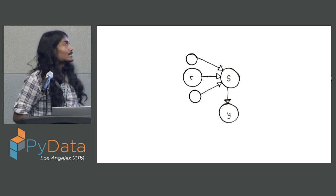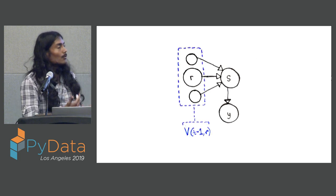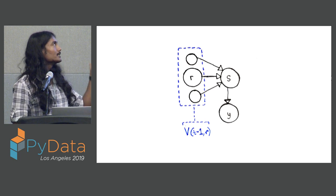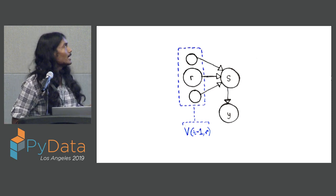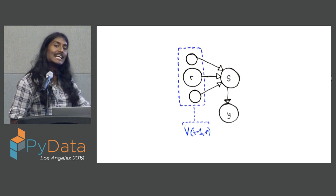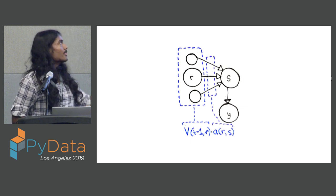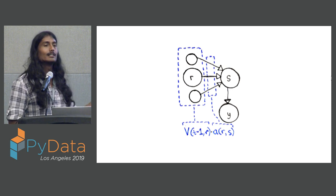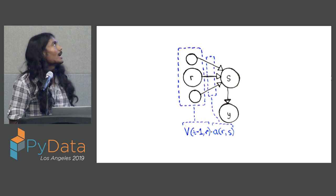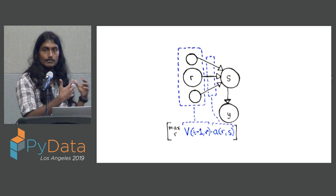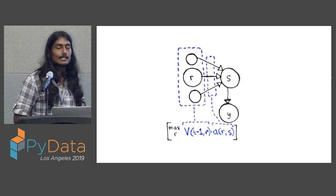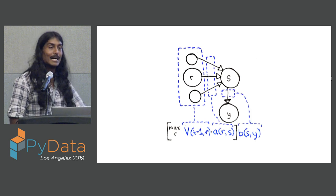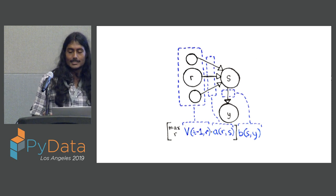Now what if we're in the middle of our sequence, at some arbitrary time t? We could have come from a bunch of other previous steps - we were at some step r at time t minus 1. We need to know what was the probability of getting to that r at that time step. Then we needed to transition from r into s - that's one of the transition probabilities. We want the maximum probability, so we look at all the possible previous states and maximize over that. And finally, we still need to emit y from that last step.